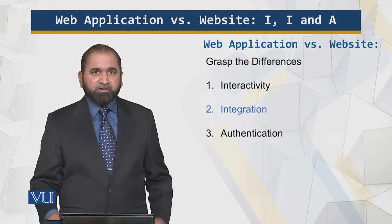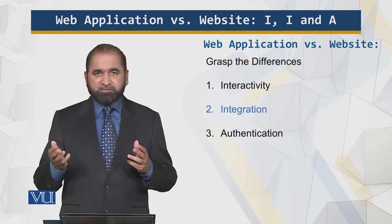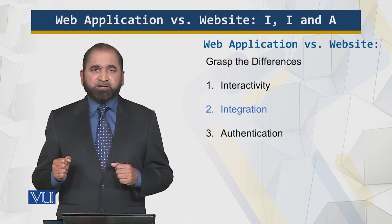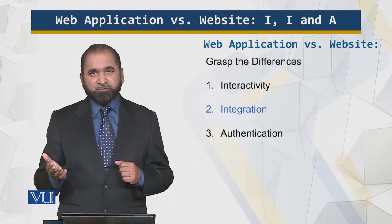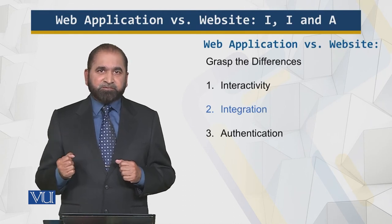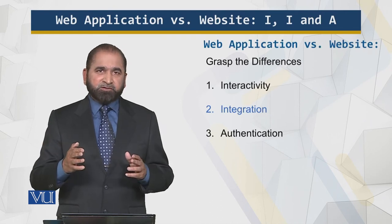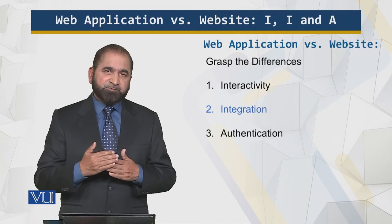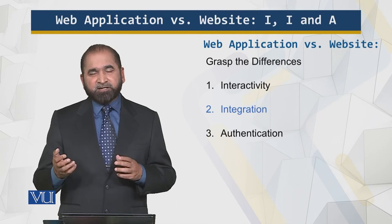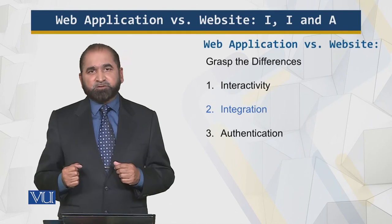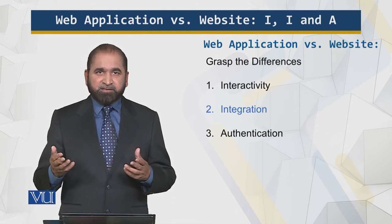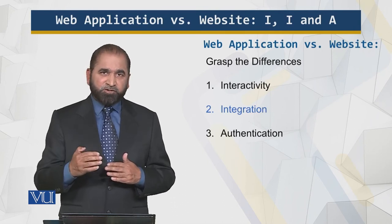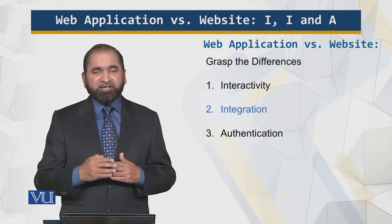The second aspect is integration, which means connecting other external systems to your web presence. For example, with a website or web application you can connect a CRM — customer relationship management — system or an ERP — enterprise resource planning — system. Integration is more important for a web application because it has to perform complex tasks. Connecting a CRM to an e-commerce system means transactional data and user feedback flow into the CRM, increasing productivity and reducing order processing time. You can connect CRM to a website to deliver relevant content, but that is not the main requirement for a website.